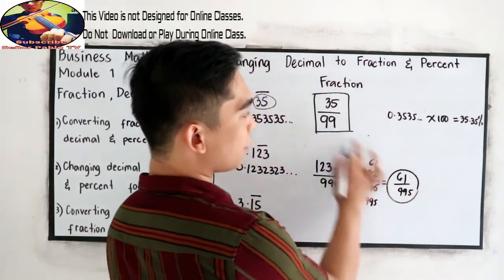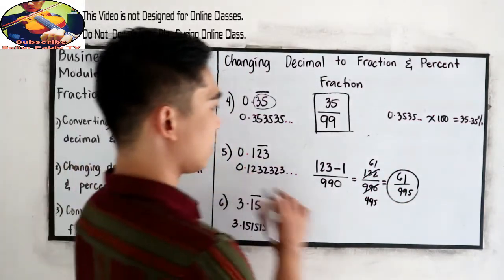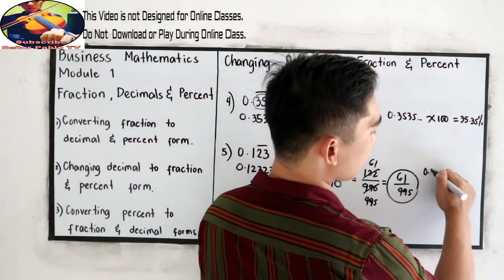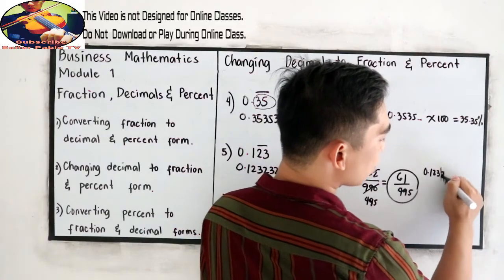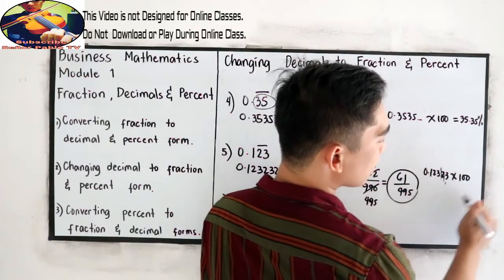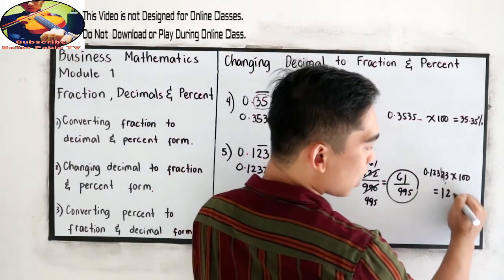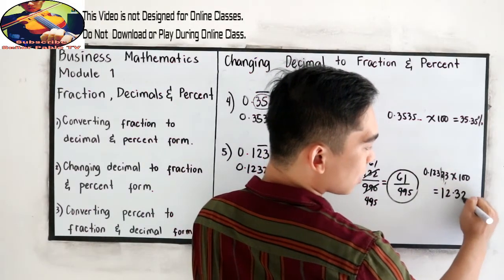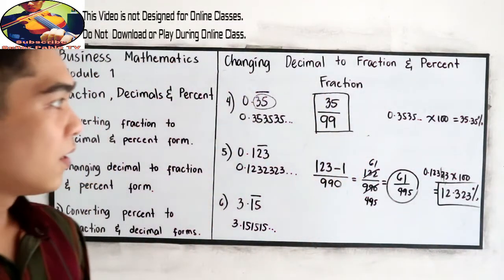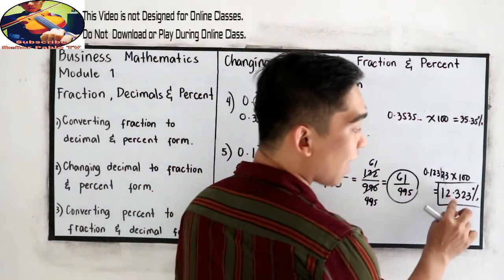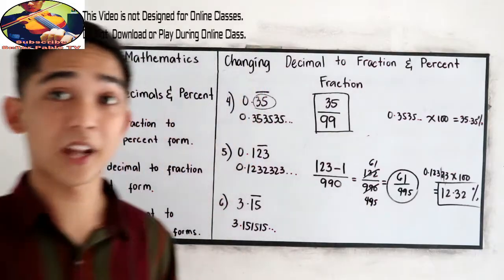That would be our fraction bar. Now, just multiply to 100. So that is 0.123 times 100. To give us, move to decimal place, 12.323. So if your teacher asks you to write it to 100 place, so 12.32 is enough.